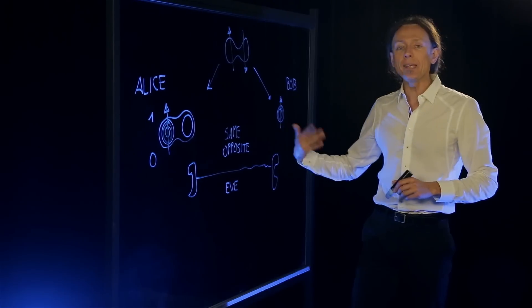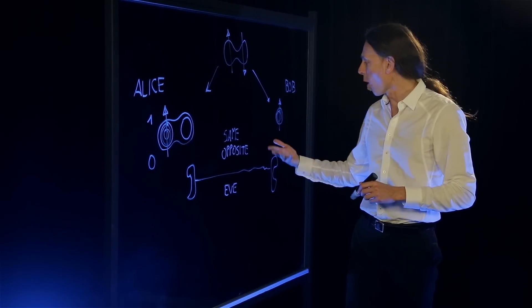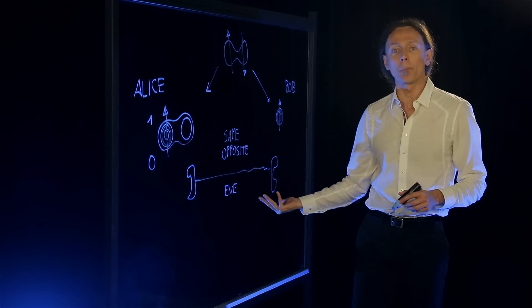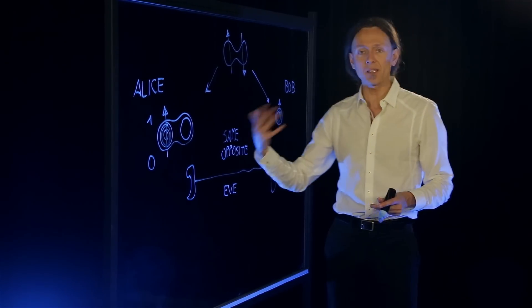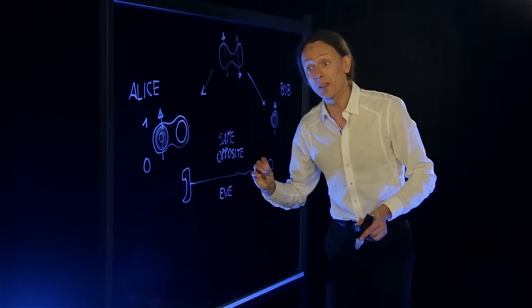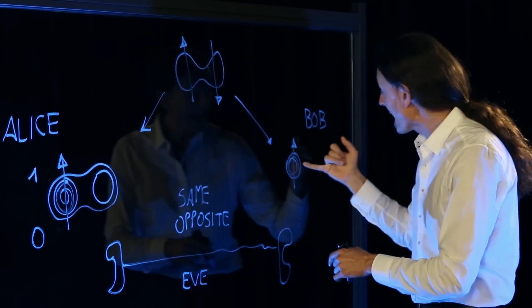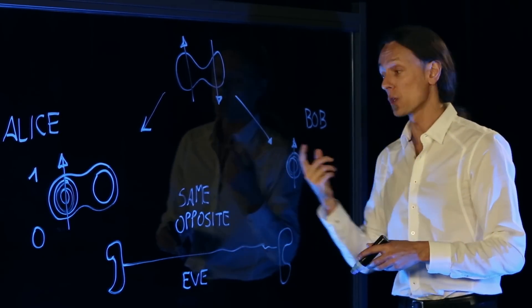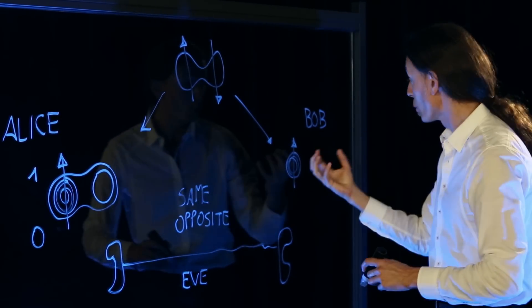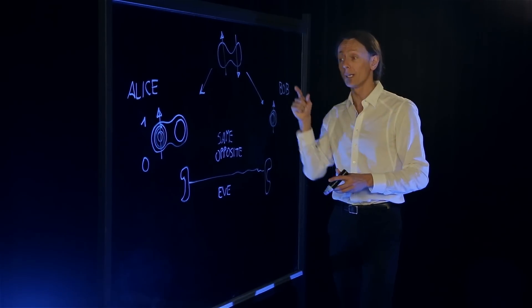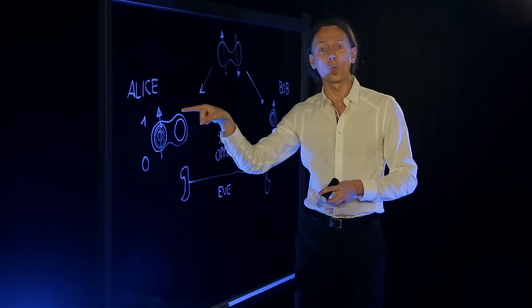This is just a meaningless string of statements. From the point of view of the spy, of the eavesdropper, this string of statements, same, opposite, opposite, doesn't mean anything. It only means something when used together with the state of the electron that is in the hands of Bob. So when Bob receives this information together with the state of the electron he has, he can reconstruct the information that Alice wanted to send him.